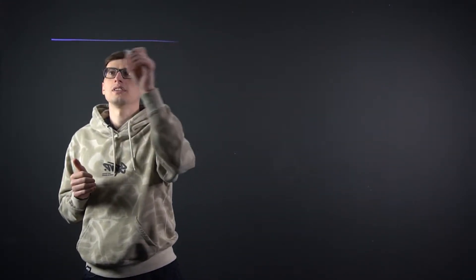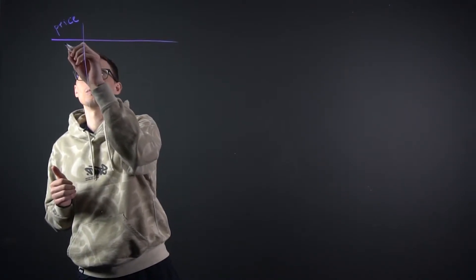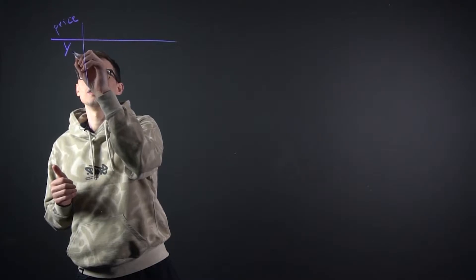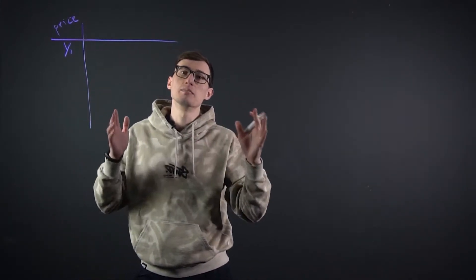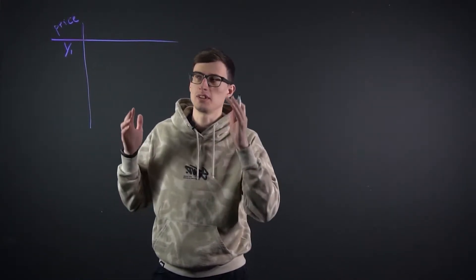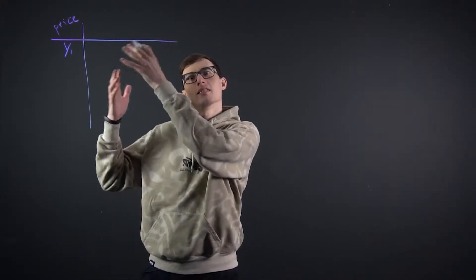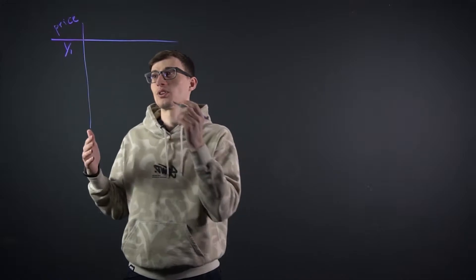So let's start and talk about house prices. We have our price, the dependent variable, and we'll call it y, y1. And we have our independent variables — the things that affect the price.